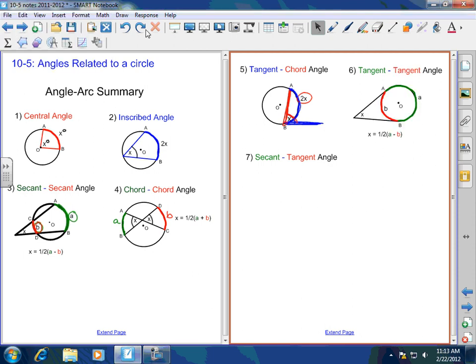Now we've got tangent-tangent angle. And the tangent-tangent angle here is X equals one-half of A minus B. It is the same formula as the secant-secant. And last but not least, the secant-tangent. The secant-tangent is also the same formula as the secant-secant. It's X equals one-half of A minus B.